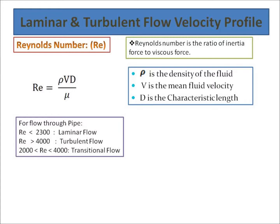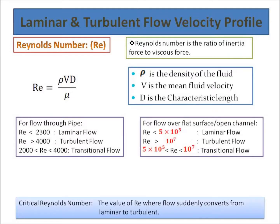For flow through the pipe, the characteristic length is the diameter itself. For internal flow, if Reynolds number is less than 2300, the flow is laminar. If the Reynolds number is greater than 4000, the flow is turbulent. In between 2000 to 4000, the flow would be transitional.